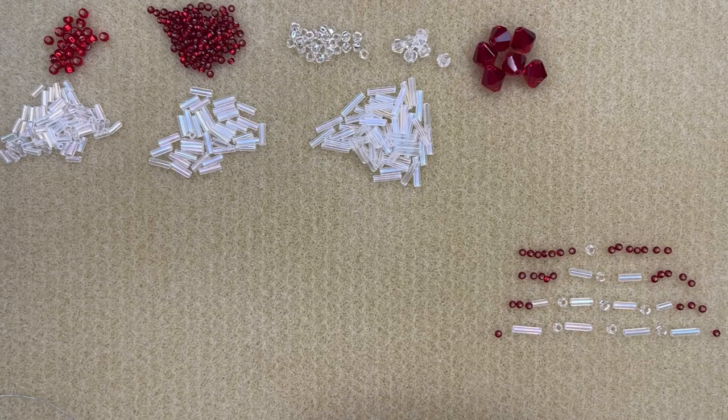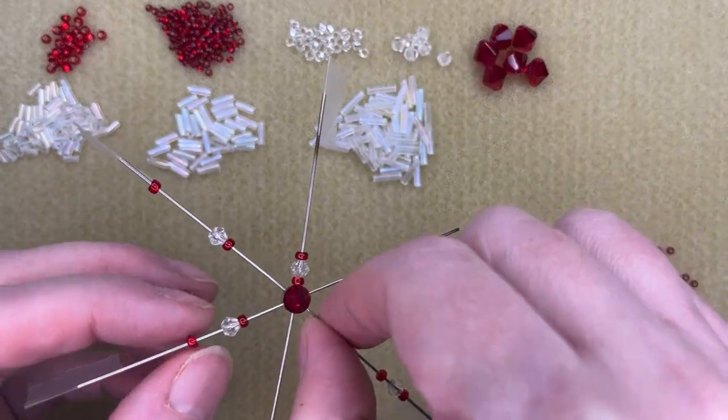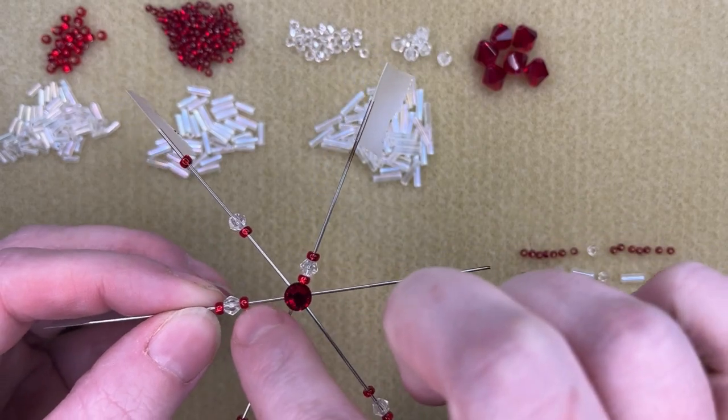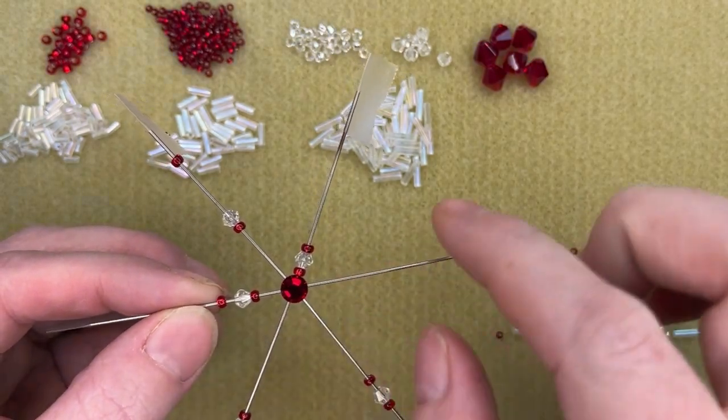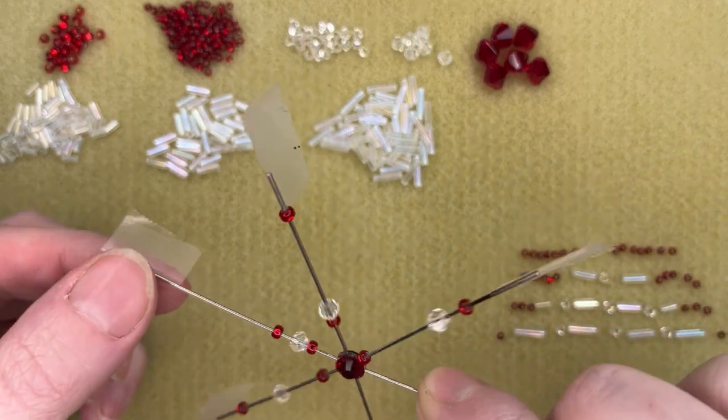So I started out with our first step here and I've got a size 8 seed bead, a 4mm bicone crystal, and a size 8 seed bead. And then on each of the spokes I taped a little piece of tape.